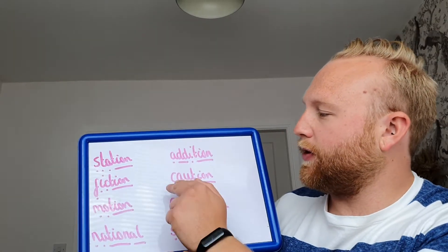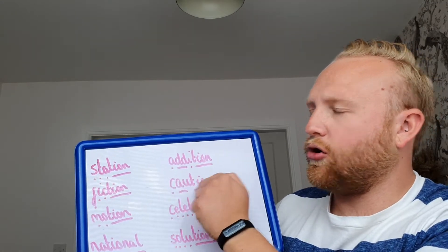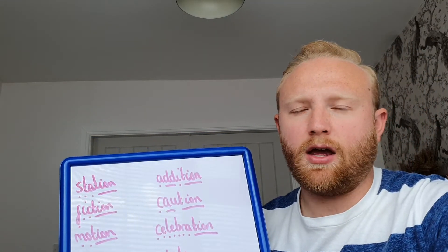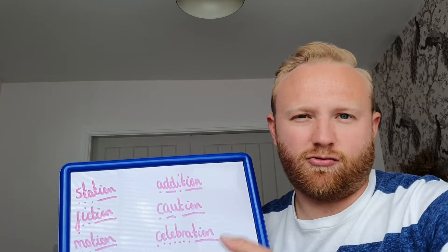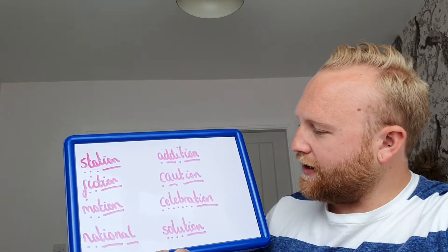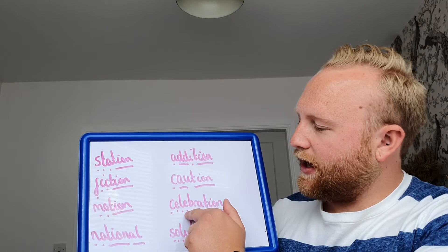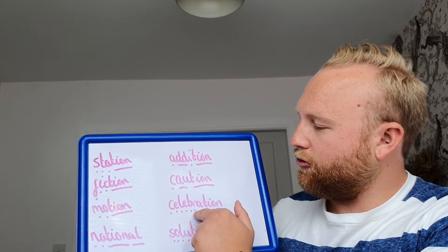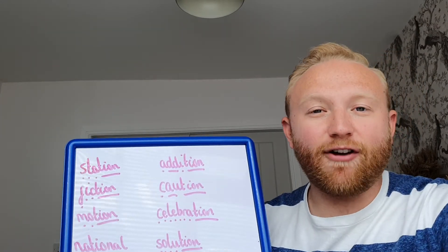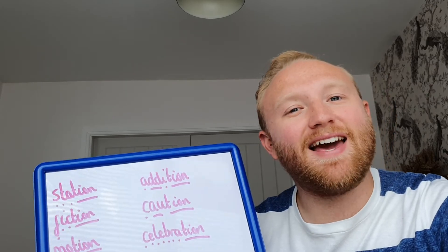Let's try this one — c-o-tion — caution. So if you're using caution, you're being a bit careful around things and what you're doing. And let's try this one, this is a long one — s-e-l-e-b-r-a-tion — celebration. Have a go at those spellings and see how you get on. See you later.